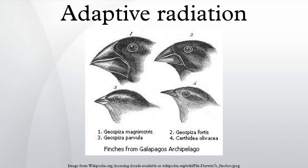Adaptive radiation, a characteristic example of cladogenesis, can be graphically illustrated as a bush, or clade, of coexisting species. Caribbean Anolis lizards are a particularly interesting example of an adaptive radiation.